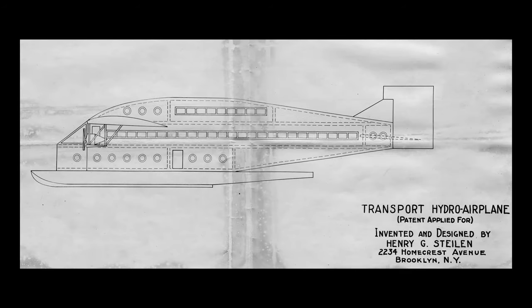Finally, we have the Stylin Transport Hydro Airplane of 1930, a large Bernelli-type six-engine commercial seaplane with three hulls, designed by Henry G. Stylin of Brooklyn, New York, and submitted to the U.S. Aeronautical Patents and Design Board.